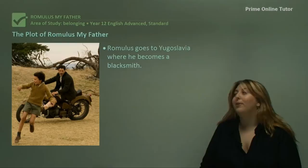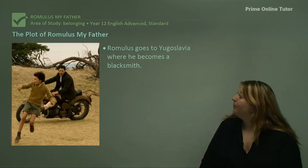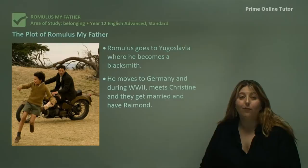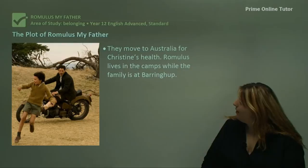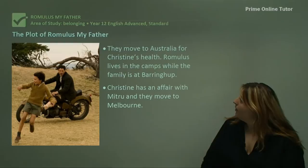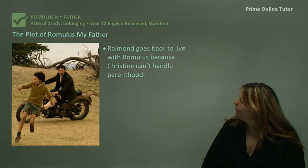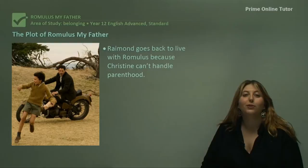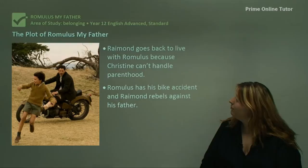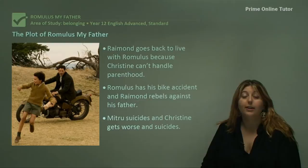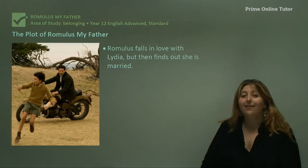Let's quickly run back through the plot of Romulus My Father to refresh your memory. Romulus is born and goes to Yugoslavia where he becomes a blacksmith. He moves to Germany and during World War II he meets Christine and they get married and have Raymond. They move to Australia for Christine's health — partly asthma but also due to her mental instabilities that are already on the rise. Romulus lives in the camps while the family is stationed at Baringup. Christine has an affair with Mitru and they end up moving to Melbourne. Raymond goes back to live with Romulus because Christine can't handle the burdens of parenthood. Romulus has his bike accident and Raymond starts experimenting with rebellion against Romulus and his rules. Mitru suicides and Christine gets worse and follows suit, suiciding soon after.